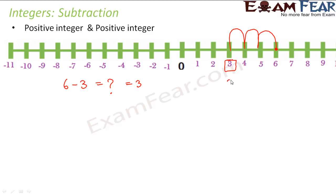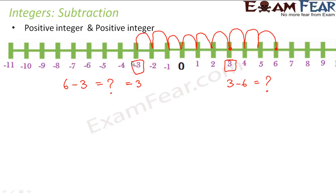Now can you tell me what it would have been: 3 minus 6? So when you perform 3 minus 6, you were at 3 and you are trying to subtract a positive number from 3. So this time also you will move towards left. But how many jumps towards left? 6 jumps. So you have reached at minus 3. So this time the result would be minus 3.